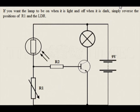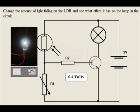If you want the lamp to be on when it is light and off when it is dark, simply reverse the positions of R1 and the LDR. Change the amount of light falling on the LDR and see what effect it has on the lamp in the circuit.